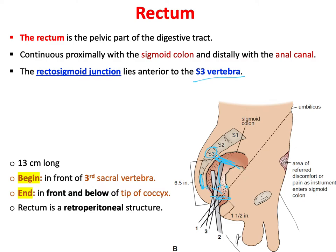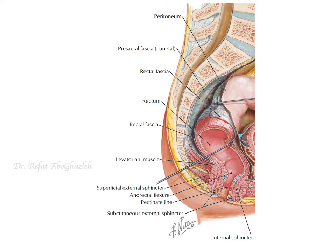The rectum is a continuation of the sigmoid colon, ending one inch below the tip of the coccyx, and continues as the anal canal, which is about one to one and a half inches long. Importantly, the rectum is not completely covered by peritoneum, making it partly retroperitoneal.